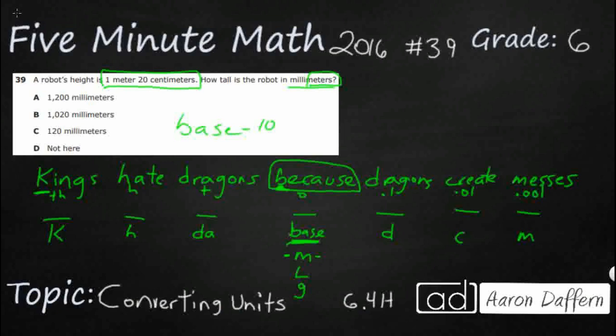And so that is going to be our thousandths place. So if we can just remember this, kings hate dragons because dragons create messes, we can get our prefixes three on the left of our base unit, three on the right.